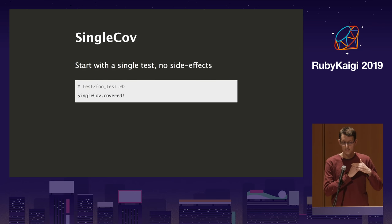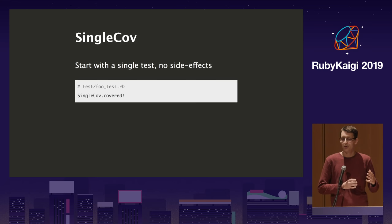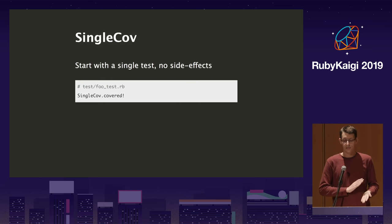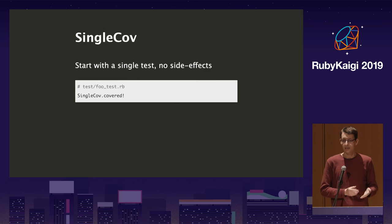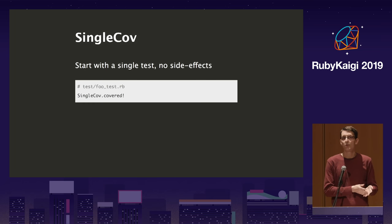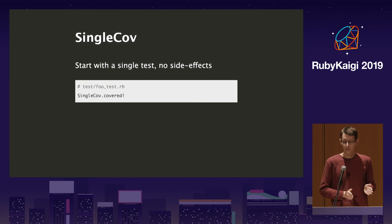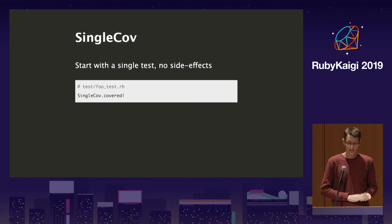SingleCov has several advantages. It's very fast because it only works on single files with low runtime overhead. It also doesn't build a giant HTML report at the end of every test — it just looks at the coverage for that file and tells you green or not green. In combination with a forking test runner, it keeps your local setup always in sync with your CI setup. It's very easy to opt in — just install the gem, require it in your test helper, and declare that a single file is now covered.